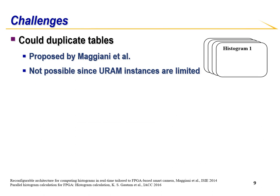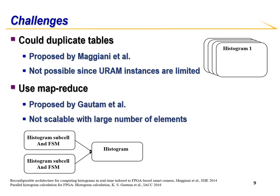There are prior works in resolving memory access conflicts for histograms. We could duplicate tables; however, the duplication number is equal to the cycles needed. This is not possible as it would require 16 table copies and URAM instances are very limited. Another method is to use MapReduce; however, the resources needed for MapReduce are proportional to the number of elements, which is not scalable for our requirements.